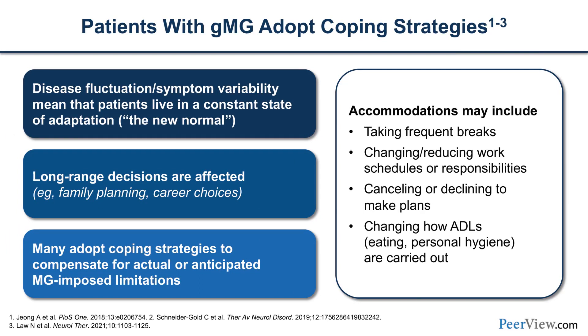We have to come to the realization that if we're not seeing any response within a defined period of time based on the therapeutic we've chosen, we need to think about a new one. There's also a 'new normal' that patients develop because of the insidious evolution of the disease — they adapt to it subconsciously and give up hobbies and things that they enjoy, attributing limitations to other causes when in fact it's due to their MG.